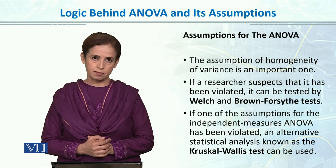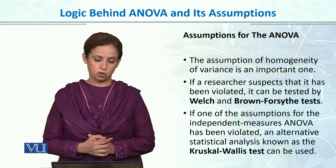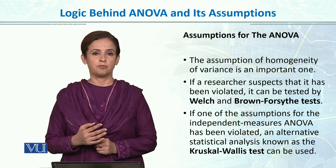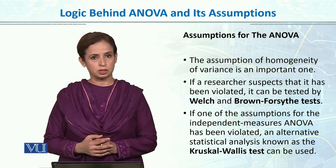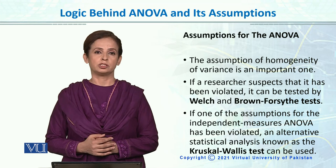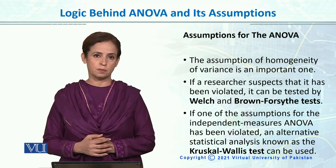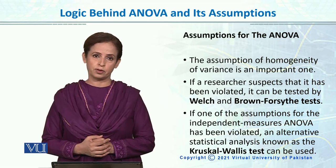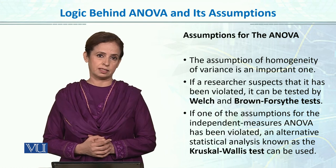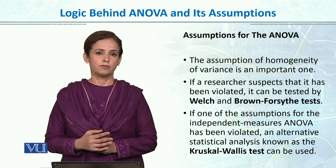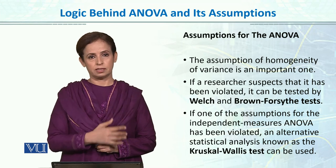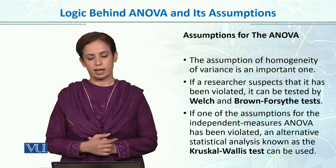ANOVA is a very robust test with many provisions. Similarly, if parametric assumptions are not fulfilled — such as if the underlying population is not normal or independence of observations is not met — you can use a non-parametric test. For ANOVA, the non-parametric alternative is the Kruskal-Wallis test.